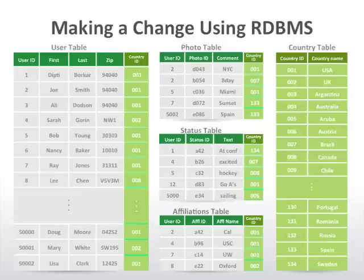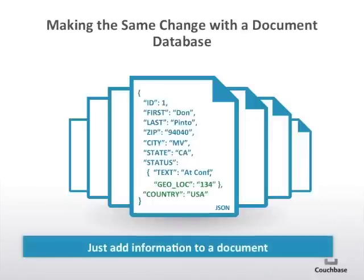Let's see what the same change would look like with a document database. Since you have all the user information stored in a single document, all you have to do is add the information to that particular document. If only 300 users opted into the new geo feature, that would translate to updating just 300 documents — different from a relational database where you have to alter the table structure and add columns for everyone, wasting space for the geo information even for users who didn't opt in.